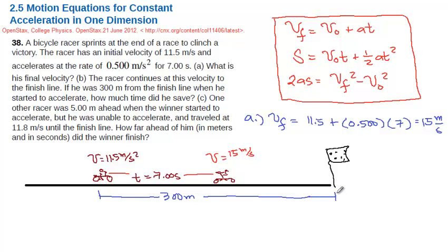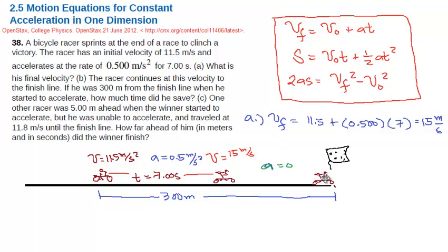Let us compute first the time it would take this racer if he were not accelerating — meaning if he had just kept his speed of 11.5 meters per second, how long would it take him to travel 300 meters? At constant velocity, time equals distance over velocity: 300 divided by 11.5 equals 26.09 seconds. That's the time if the racer kept a constant speed of 11.5 m/s.